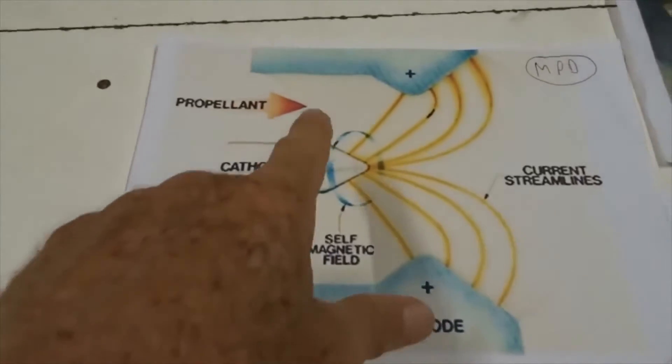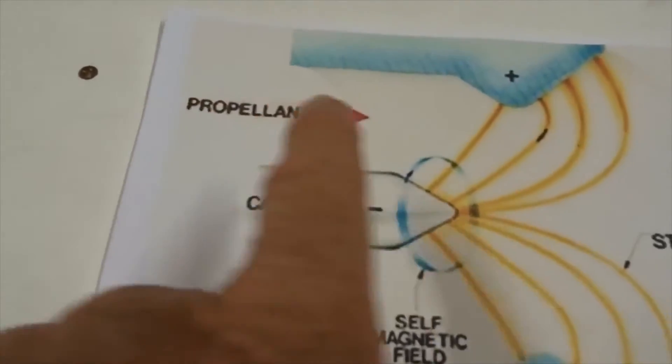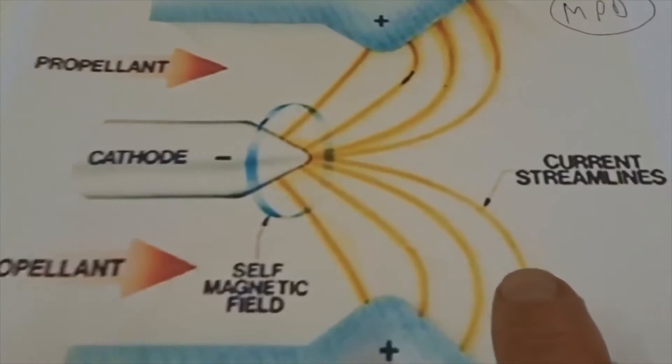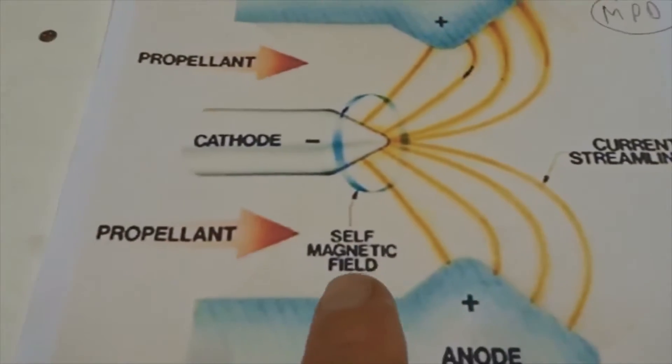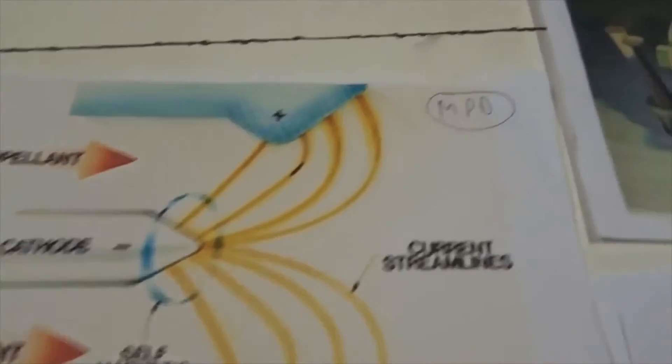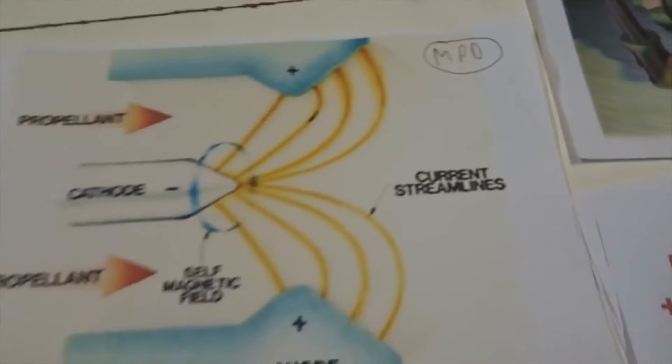And here's a more schematic of it. They're twice as big, one on each side. Propellant flows that way and that way. Current streamlines. And that's how they power space vessels. Magnetoplasma dynamics.